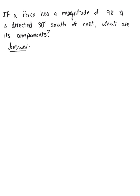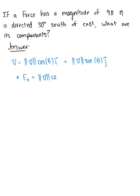Let's recall that from when we were considering a vector on the unit circle, we obtained the equation for some vector V as the magnitude of vector V multiplied by cosine of theta times unit vector i, plus the magnitude of vector V times sine of theta times unit vector j. The horizontal force F sub x is the coefficient of unit vector i — so the magnitude of V times cosine of theta. And the vertical force F sub y is the coefficient of unit vector j — so the magnitude of V times sine of theta.